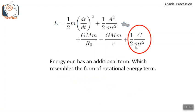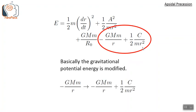The energy equation has an additional energy term, half·c/(m·r²). In the case of pure elliptic orbits without apsidal precession, c is zero; here it is some non-zero constant. Note this term is similar in form to the rotational energy term half·A²/(m·r²). This new term basically comes from a modification of the gravitational field — for example, due to the presence of a third mass or asymmetries in the mass distribution. The new gravitational potential energy is −GMm/r plus half·c/(m·r²).